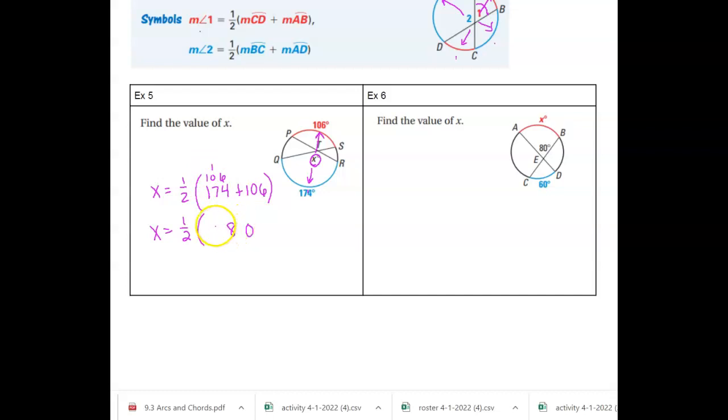Oh, 106. I'm just going to add these together. It's 0, 1, 8, 280. You're welcome to use a calculator. And then half of 280 is 140. And that's the size of the angle. Now notice it is an obtuse angle. So this should make sense. Okay.